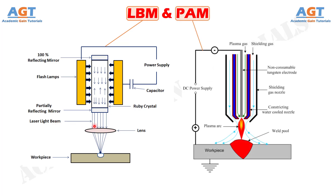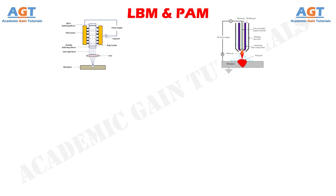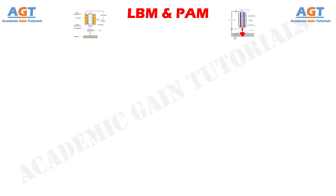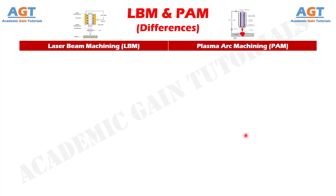Plasma Arc Machining, also known as Plasma Arc Cutting, utilizes a high velocity jet of plasma to supply thermal energy, or heat, for melting and vaporizing the workpiece. So let's look into the basic differences between Laser Beam Machining and Plasma Arc Machining in a tabular form.